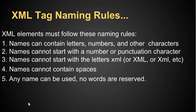Here are the rules for naming tags in XML. Names can contain letters, numbers, and other characters. Names cannot start with a number or punctuation character. Names cannot start with the letters XML in any case variation — don't use XML at all in any names. Names cannot contain spaces. Any name can be used and no words are reserved. Unlike HTML where H1 or 'body' mean something, in XML there are no reserved words — you can use any descriptive terms you wish for a tag name.